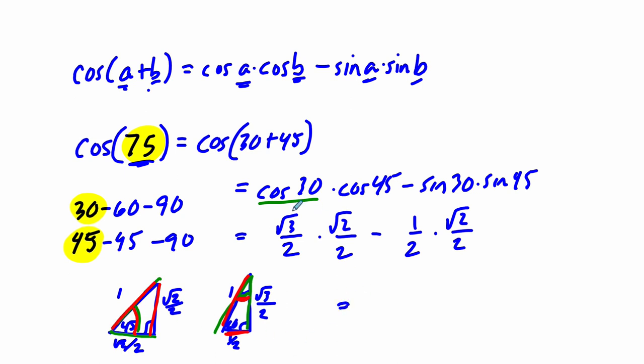And now we just evaluate this. √3 times √2 is just √6 minus, don't need a double minus there, 1 times √2 is just √2, all over 4. And that's our answer.